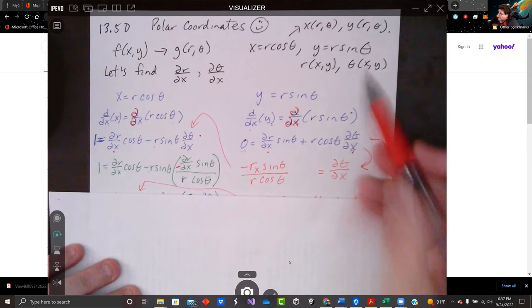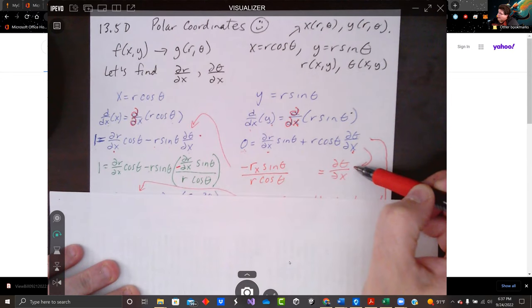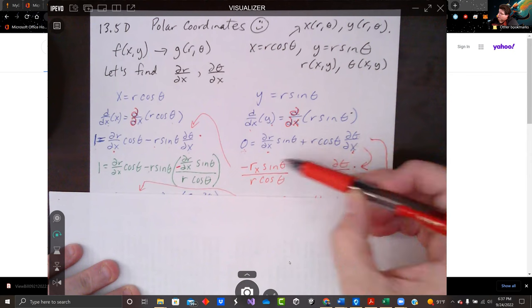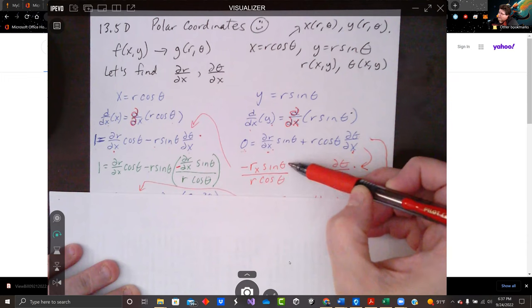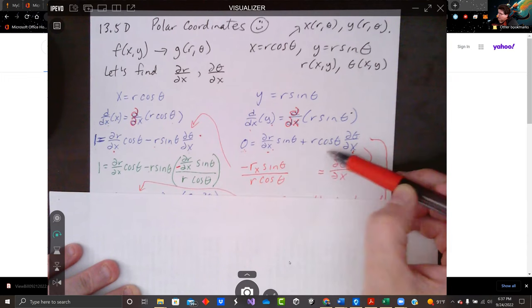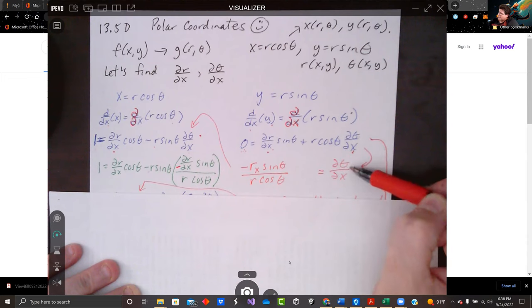So I solve this one over here. I subtract over the partial of r with respect to x sine theta. So I've got my negative partial of r with respect to x sine theta on top. I divide by r cosine theta. That's my derivative of theta with respect to x.